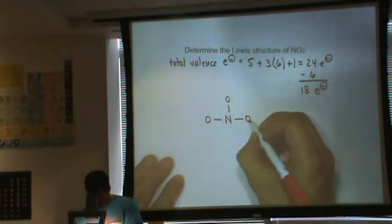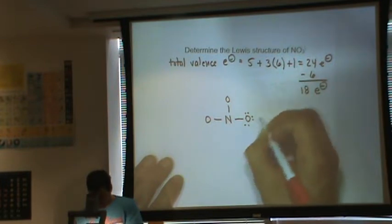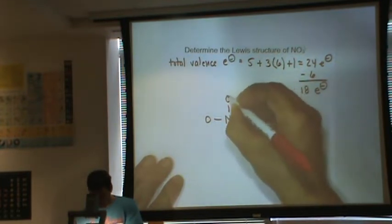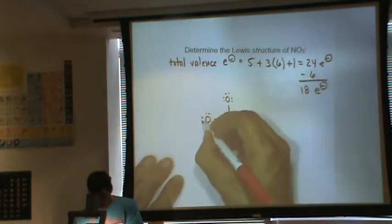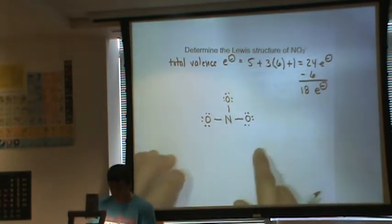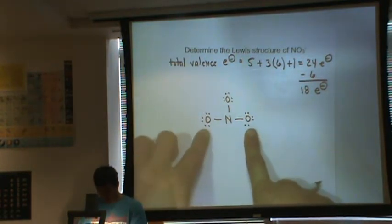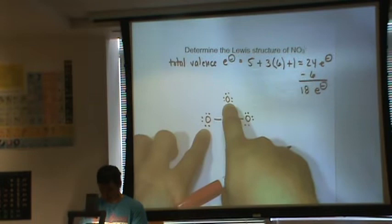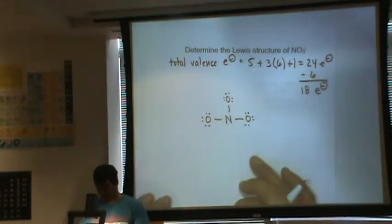So this oxygen has two right now, so it wants six more to have an octet. I'm going to put one, two, three, four, five, six. So that oxygen's happy. Do the same thing for this one here. And then the same thing for this oxygen atom. So now if we check our octet rule, this oxygen has eight electrons, happy. This one has eight electrons, happy. This one has eight electrons, happy. This nitrogen is not. Right now it has 1, 2, 3, 4, 5, 6 electrons.